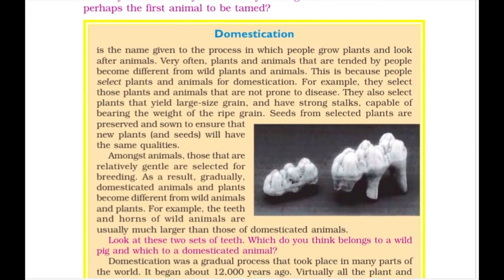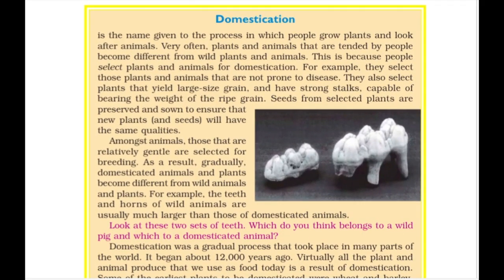What does domestication mean? Domestication is the process by which people grow plants and look after animals. Most animals and plants are wild, but once human beings tame them, it is known as domestication. Examples include wild dogs and wild ass, which are very large in size. The teeth of a domesticated pig are smaller compared to those of a wild pig. Humans needed plants with large grains, strong stalks, and the ability to bear the weight of ripe grains — all these were required for a plant to become domesticated.